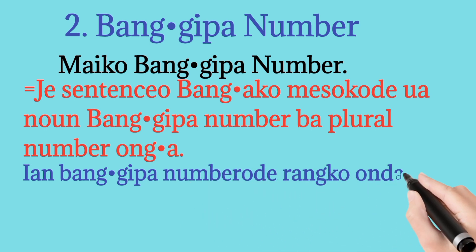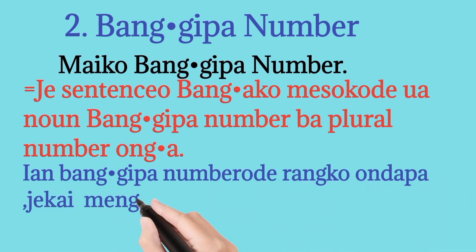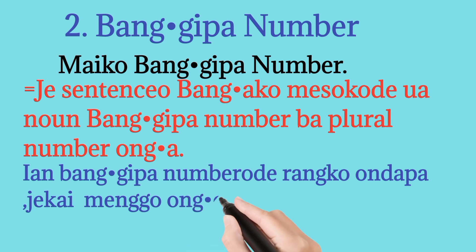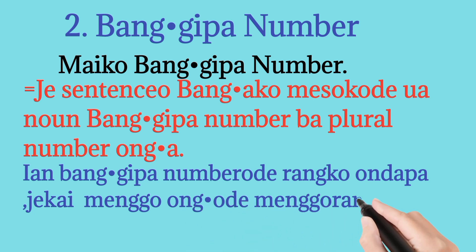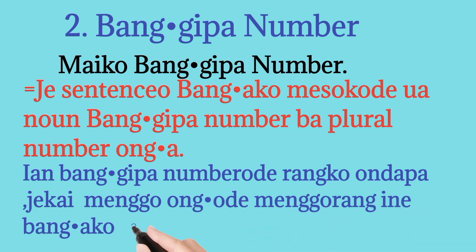Yan banggepa nambar ro de rangko undapa jekai menggo ngode. Menggorang ni bak ako misoka. Yan deki bing banggepa nambar ro ramai kana. Rangko undapa namo, rangko undapi mengena. Bak ako misoka na. Yan deki rang sange naunan. Yan ek jempel banggeja sentence rangko raki misoka nambar mo han yang na.